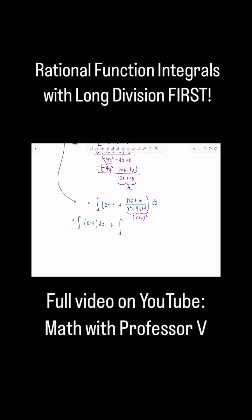Okay, so what I like to do is go like this. You have 12x plus 16 over x plus 2 quantity squared.